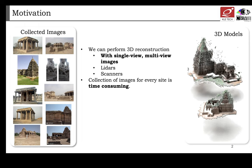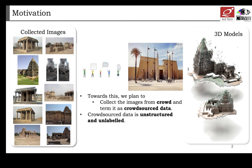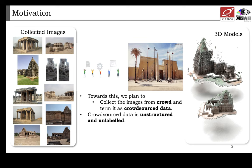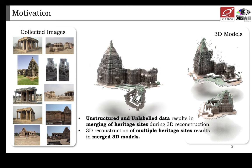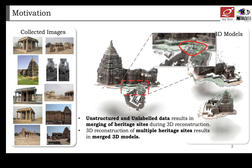Collection of images of heritage sites across the globe is time-consuming. Towards this, we perform the collection of images through crowdsourcing and name that data as crowdsourced data. The data is unstructured and unlabeled, resulting in poor and merged 3D models as shown here. A minimal similarity between structures will create a merged 3D model.